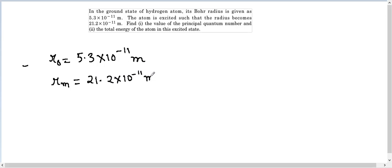Now we know that the radius is directly proportional to the principal quantum number. Therefore, as per understanding, we can write that r_m is n times of r₀. So just put in the values now: 21.2 × 10^-11 is equal to 5.3 × 10^-11 into n.